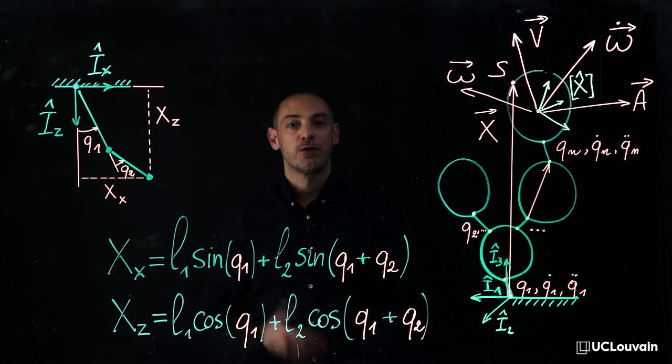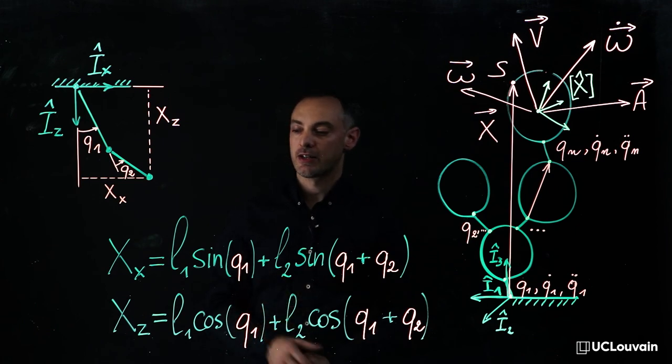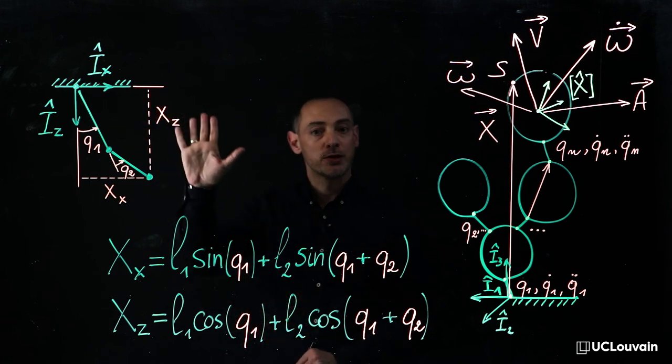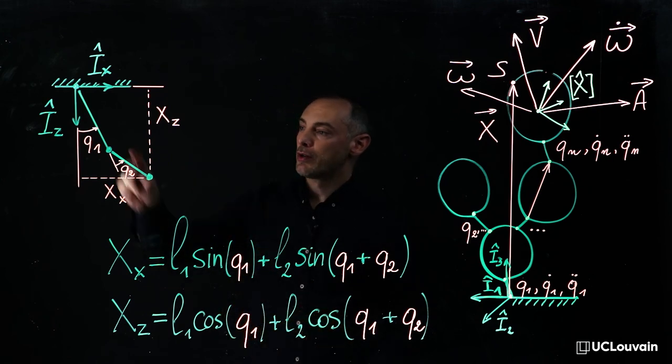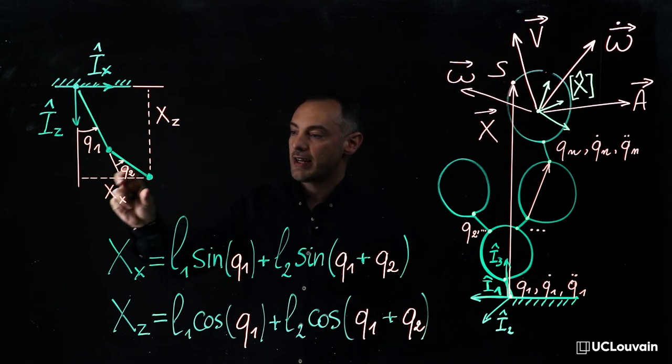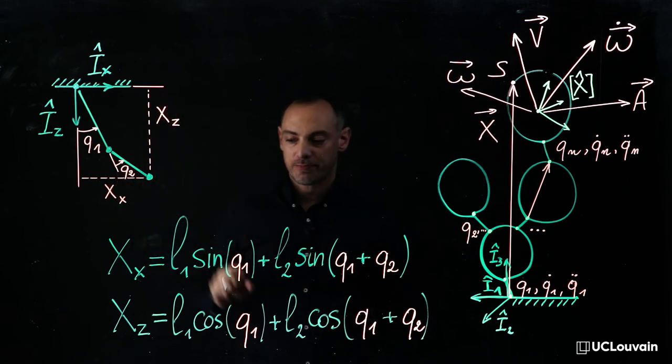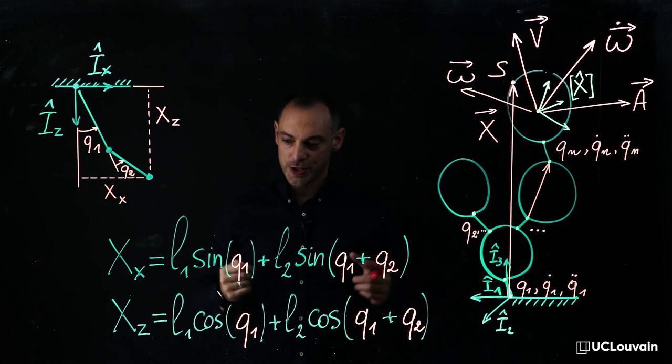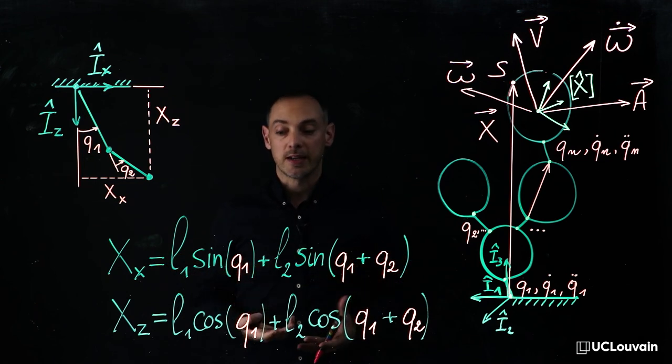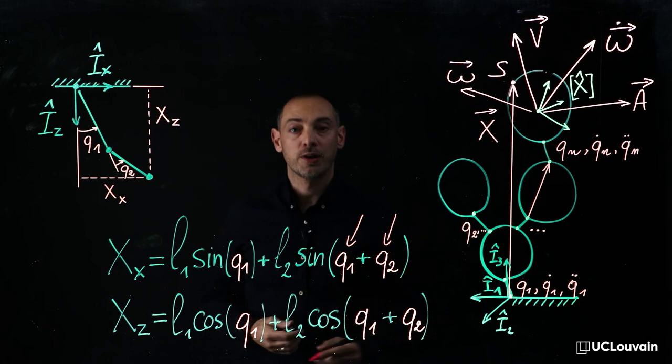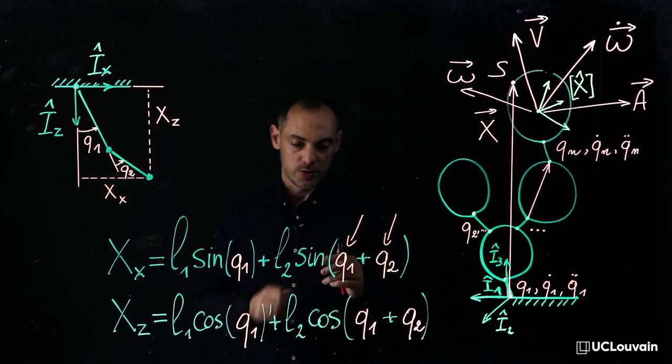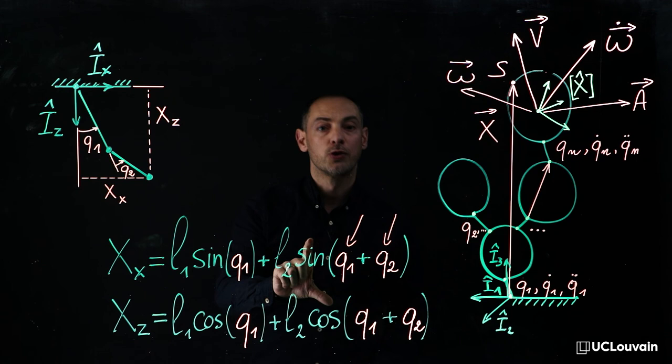For example, let's focus on the inverse kinematics of the double pendulum at position level. In this case, the goal is to compute q1 and q2 for given xx and xz. In view of these equations, everybody understands that their computation becomes more difficult due to the presence of trigonometric functions to be reversed.